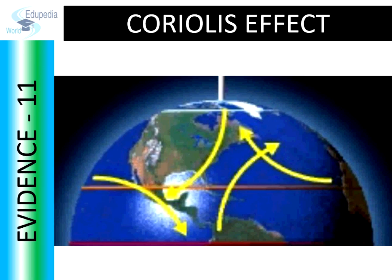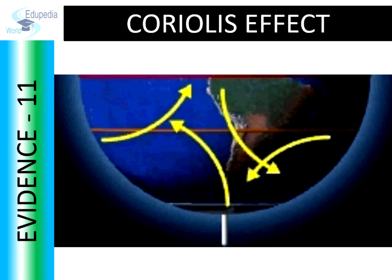Evidence 11: It is a well-known fact that any freely moving object, for example winds, is pushed towards its right side in the northern hemisphere and towards its left in the southern hemisphere due to Coriolis force. This process is known as the Coriolis effect. If the Earth was flat, this would not be possible.